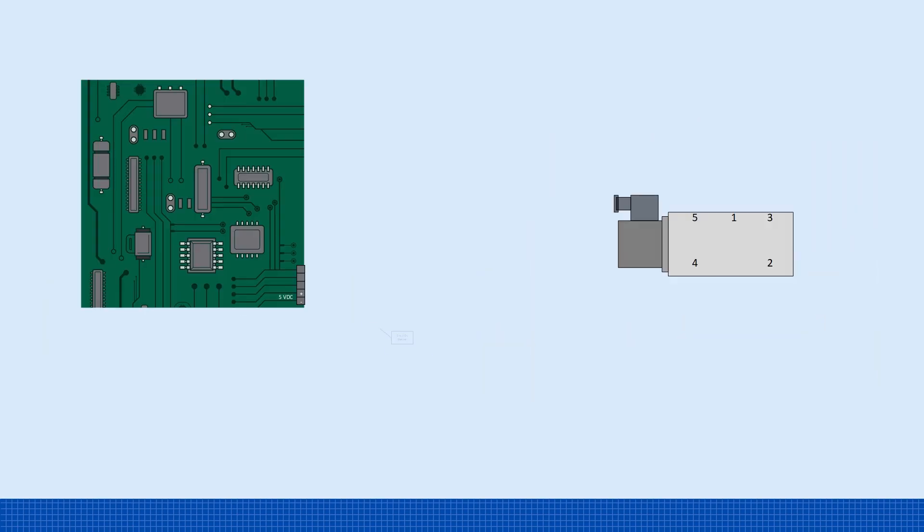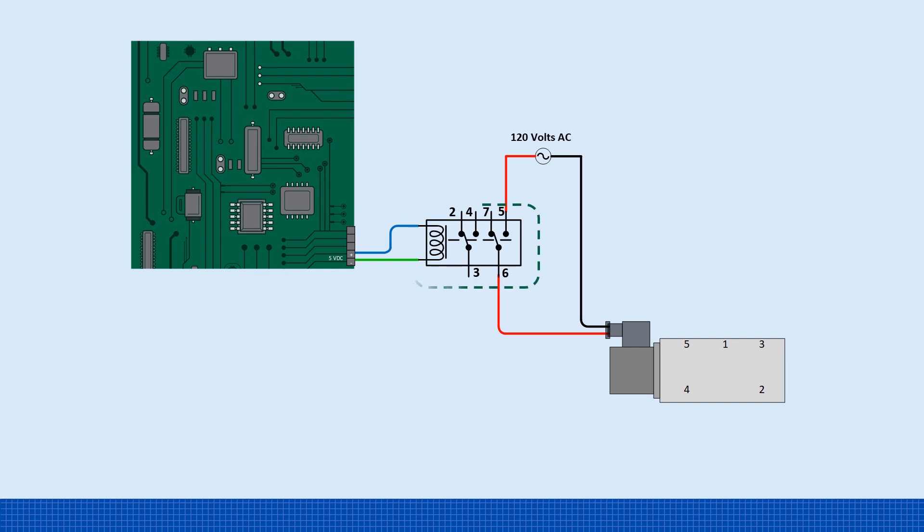So what is the third reason to use a relay? Let's say you have an electronic control card that only outputs 5 volts DC. That's not enough to directly power a 110-volt AC solenoid. But by using a relay with a 5-volt coil, the card can energize the relay. Then the relay's contacts, rated for higher voltage, can be used to switch the 110 volts to the solenoid.